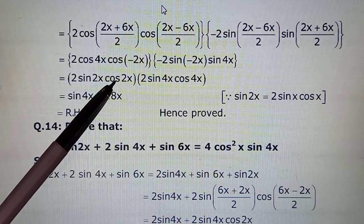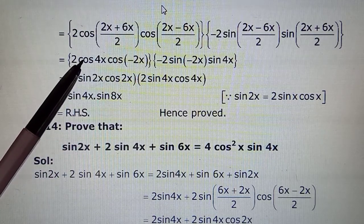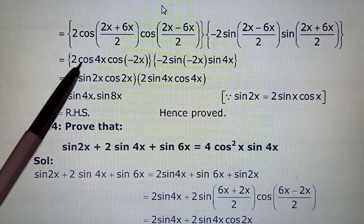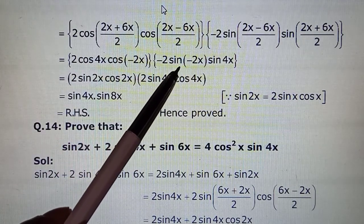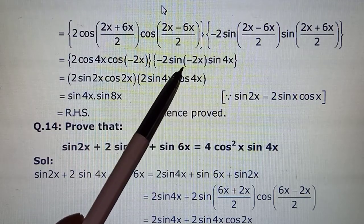Minus humara fourth quadrant mein aata hai. Fourth quadrant mein cos is positive. So this reduces ultimately to cos 4x and cos 2x which we will rearrange later of course.